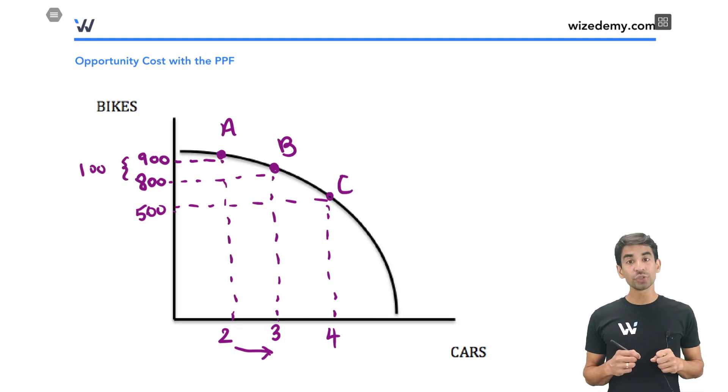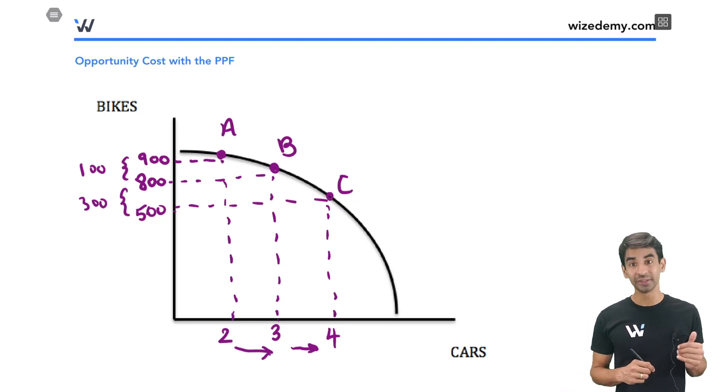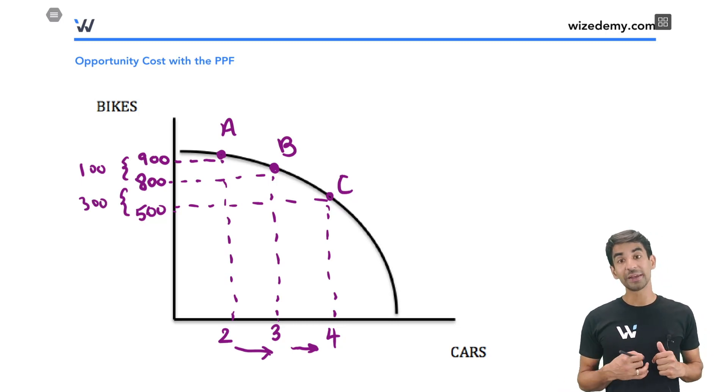And then as you go from point B to C, how many extra cars are you making from B to C? It's again one extra car from three to four. And now how many bikes do I have to give up from point B to C? Now I have to give up 300 from 800 to 500. So as you're going to the right, is the opportunity cost getting bigger or smaller? As you go to the right, is the opportunity cost getting bigger or smaller? And the answer is it's getting bigger.